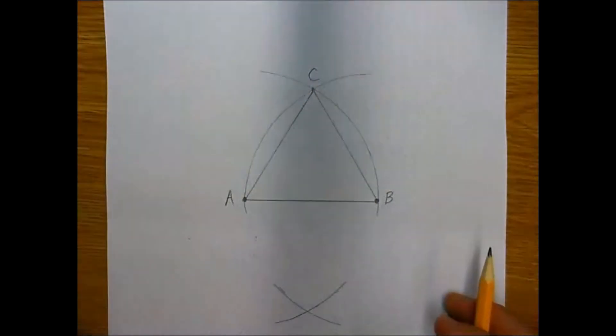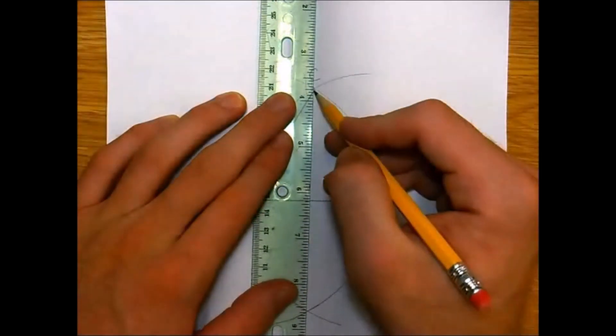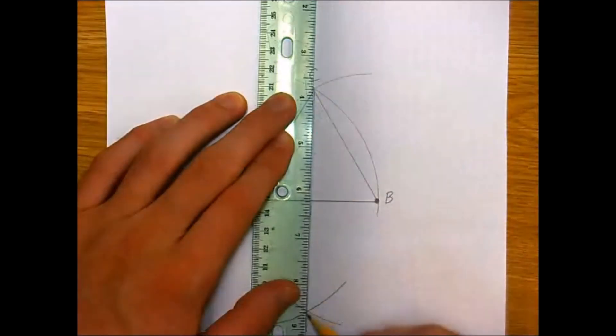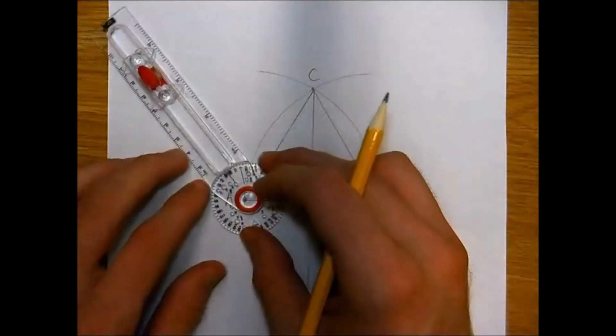Where the two arcs intersect, we're going to connect C to the intersection of those two arcs. This will represent the perpendicular bisector of side AB. Remember, point C is the same distance away from AB, so we don't have to swing additional arcs.